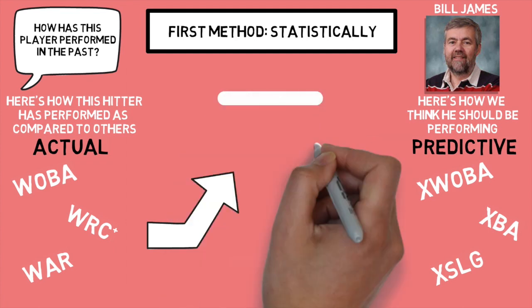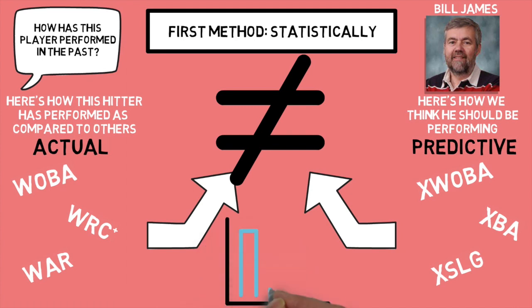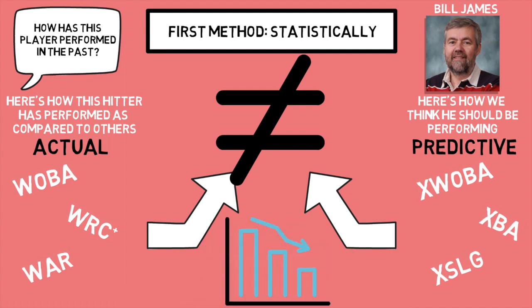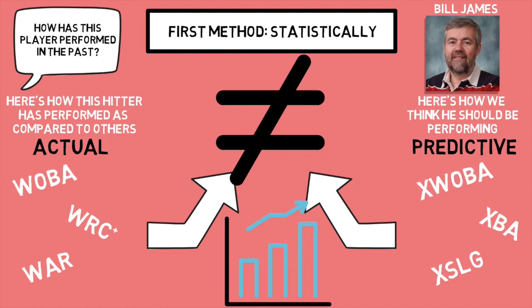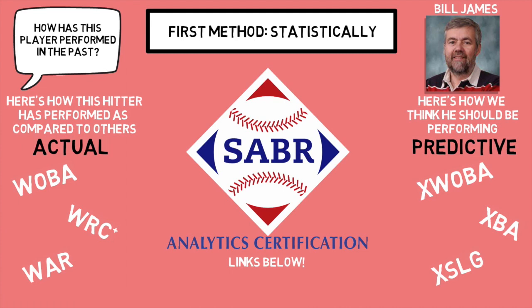The key takeaway from utilizing actual and predictive statistics is that they are useful in understanding players who are under or over performing. If a player's actual and predictive stats are equal, he's getting the results we would expect. But if they are different, it could tell us a player is due to see worse numbers in the future if his predictive are less than his actual, or improved performance moving forward if his predictive is greater than his actual. If you want to learn more, check out the first course in the Saber Analytics Certification Program — link at the top of the description.